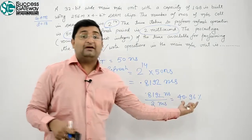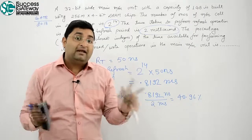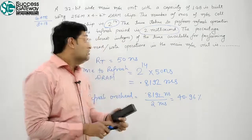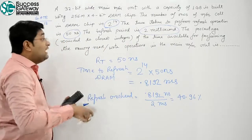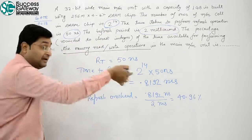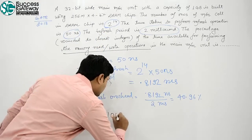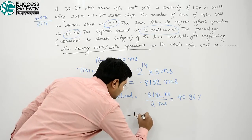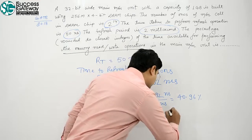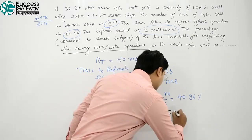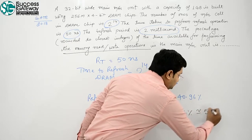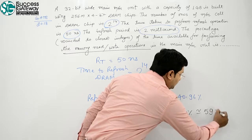For that, is time period mein, aap memory mein read or write operation nahi kar sakte. Joh apanne conceptually padaata, to how much time ya how much percentage aap ki memory available hai, that is total 100 percent minus 40.96 percent. What you will get? 59.04 percent, that is closest integer is 59 percent.